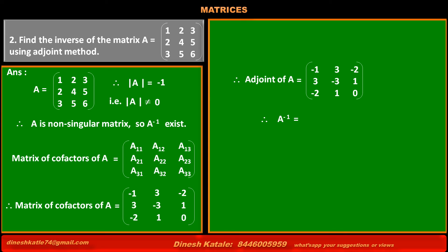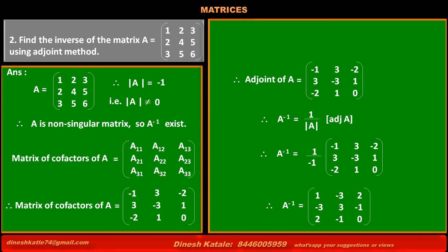Therefore, A inverse = (1 / det(A)) × adjoint(A) = (1 / -1) × adjoint(A) = -1 × adjoint(A). Multiplying the adjoint matrix by -1, we get A inverse with elements: [1, -3, 2], [-3, 3, -1], [2, -1, 0].